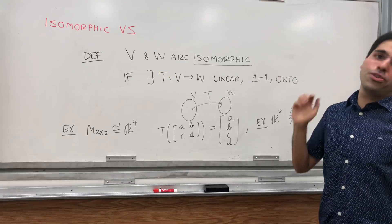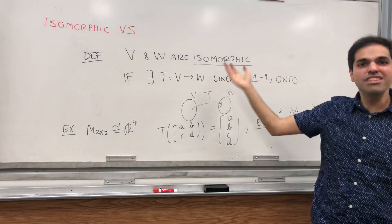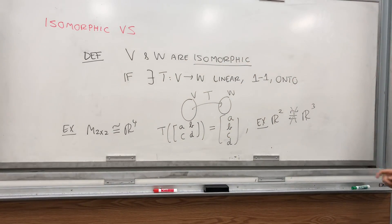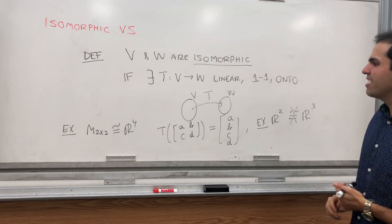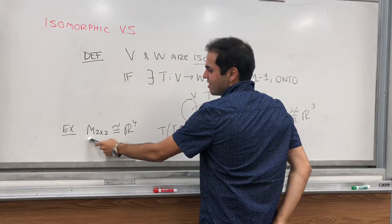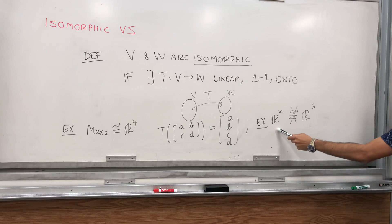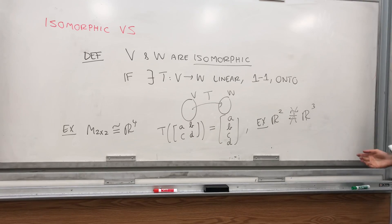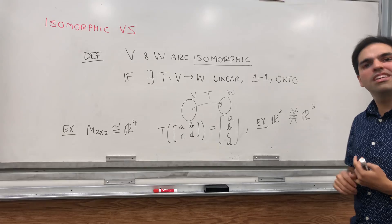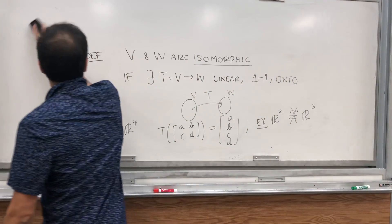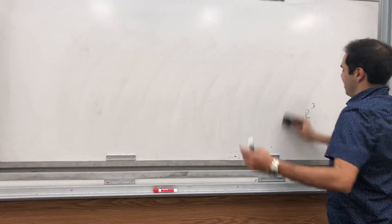Now, in theory, it's hard to show something as two things are isomorphic because you would have to give me an explicit linear transformation between them with those two properties. But it turns out it's a much easier criterion to determine if two things are isomorphic because notice the dimension of M2 by 2 is 4 and that matches the dimension of R4. Similarly here, the dimension of R2 does not match the dimension of R3. So it turns out a very easy criteria to determine if two vector spaces are isomorphic is just count the dimensions. If the dimensions are the same, then they're isomorphic. If not, then they're not isomorphic.